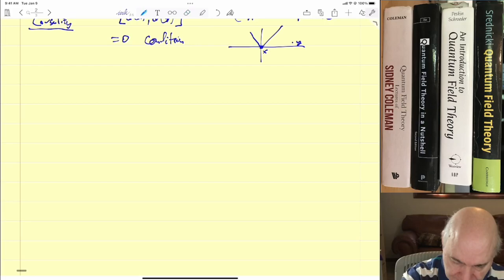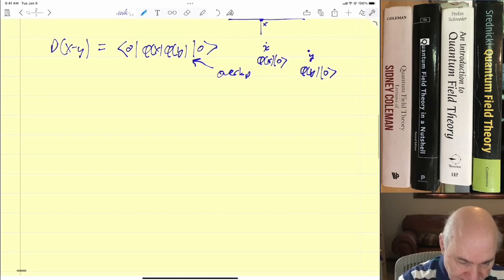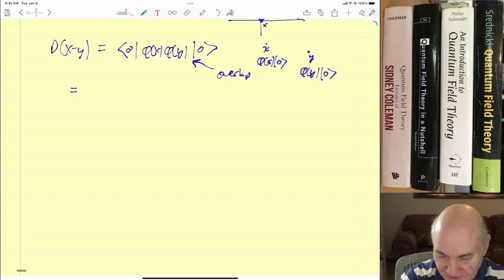So now Peskin and Schroeder define the D-function, sort of like the propagator. The idea here is φ(y) creates a particle at y, and then the other φ, and then we figure out the overlap with the particle at x. So we imagine if there's a particle at y, what are the chances that it will also be observed at x? So then we take the states. A particle at y is φ(y), and a particle at x is φ(x). A particle at y is φ(y) acting on the vacuum, and we take the overlap.